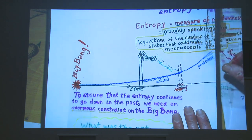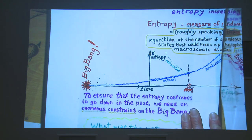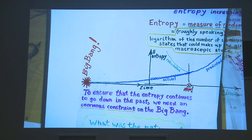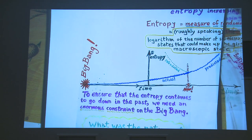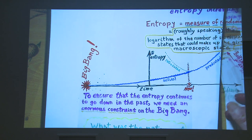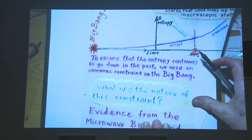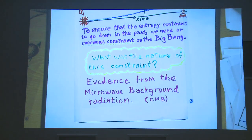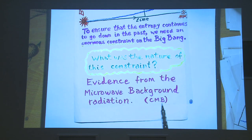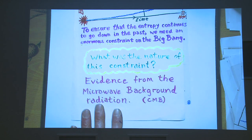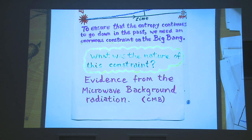So something has pulled this entropy curve down in the past. Going back and back in time to the Big Bang, if there was some reason the universe started at a very, very small entropy, that would be the explanation. We need a huge constraint on the Big Bang. The most impressive piece of evidence about what the Big Bang was like comes from the CMB—the Cosmic Microwave Background—radiation coming at us from all directions, which got the Nobel Prize twice.